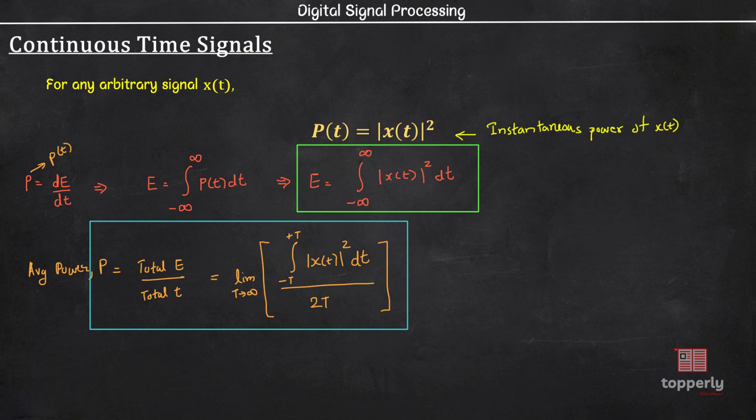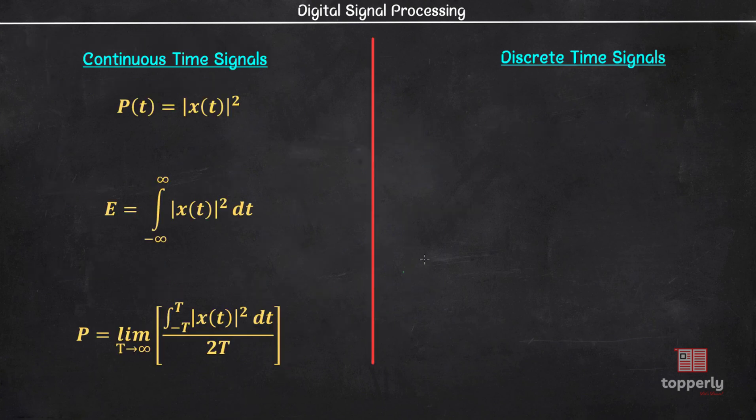Now that you have proper base, let us see the equations for energy and power in the case of discrete time signals. Here we replace all t with instances n. So in the case of discrete time signals, the power at any instant n is P(n) equal to magnitude of X(n) squared.